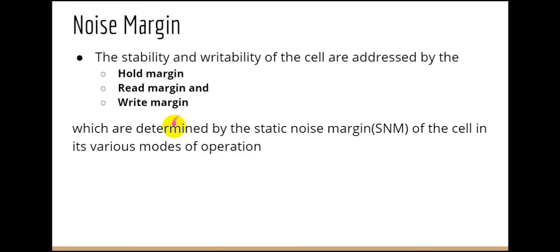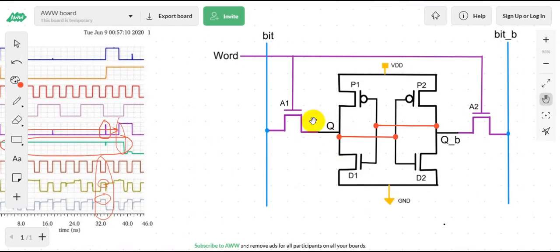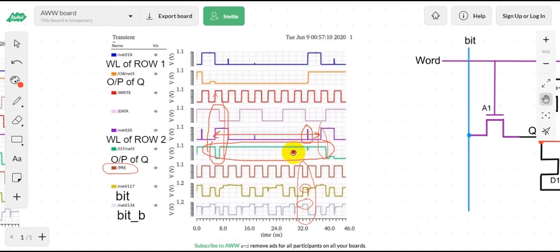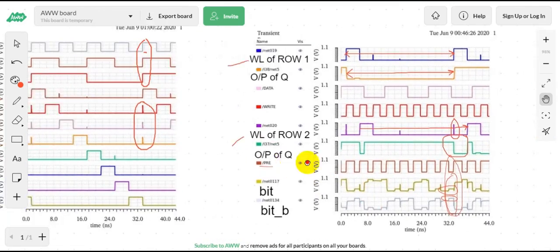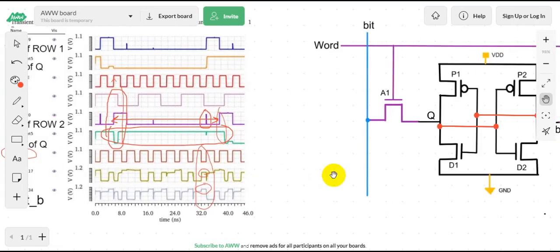We already have an idea about the hold margin. Due to the low voltage on bit, the Q node goes below the hold margin voltage, which is why your stored data is lost and flipped. Similarly, data can flip from 0 to 1 when the Q node goes above the hold margin. This situation only arises when multiple word lines are raised for a very small amount of time. Now let's talk about the read margin and the write margin.